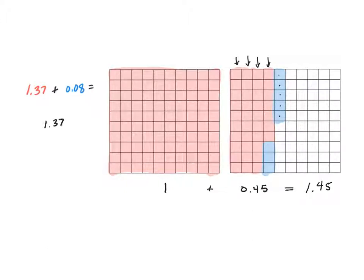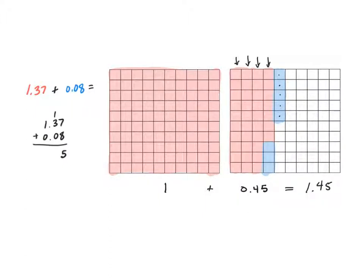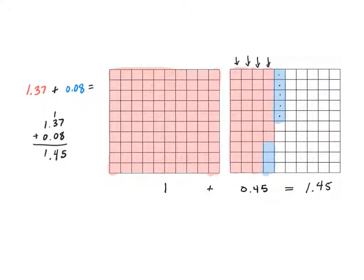When I work out the actual problem and line up all the place values, I have eight plus seven hundredths equals fifteen hundredths, and then I regrouped to make a tenth. That fifteen hundredths was this entire section here. We had eight hundredths plus seven hundredths — when I regrouped, I left the five hundredths in the hundredths place and regrouped ten of them as one tenth. Then three tenths plus one tenth is four tenths. So the answer is one and forty-five hundredths.